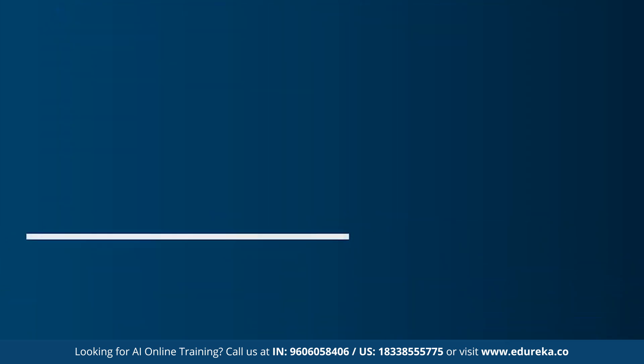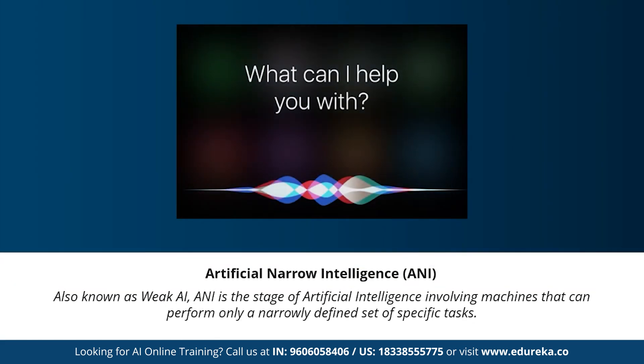Now let's understand the different stages of artificial intelligence. A lot of videos and articles state that artificial general intelligence, artificial narrow intelligence, and artificial super intelligence are the different types of AI. To be more precise, these are actually the three different stages of AI — the types and the stages are completely different things. Under the stages of artificial intelligence, we have artificial narrow intelligence, artificial general intelligence, and artificial super intelligence.